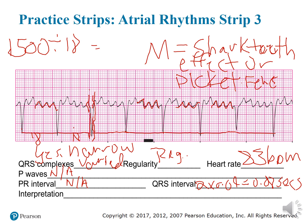It does kind of look like shark teeth going on right here — it's kind of pointing up. So that only leaves atrial flutter. Remember, atrial flutter can be either regular or irregular, depending on how many times the AV node lets the impulse go through.